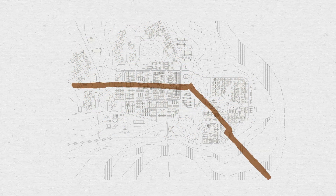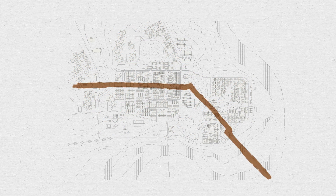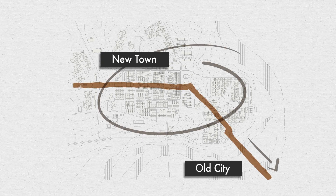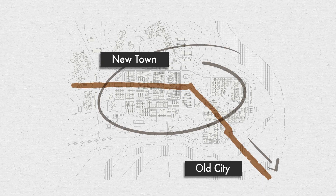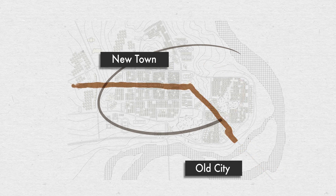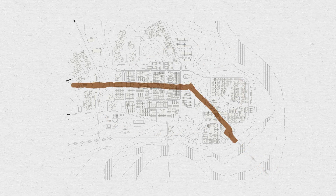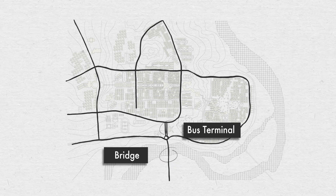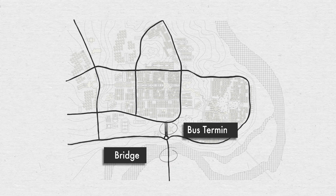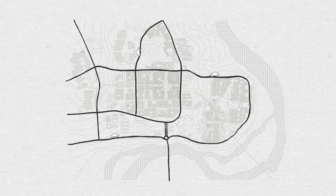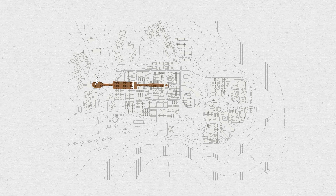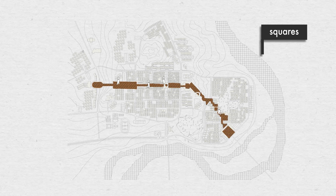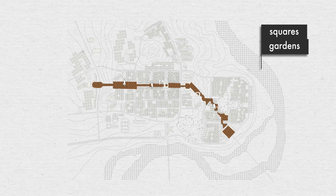Cameron Deber planned a linear pedestrian spine fluctuating in width that would connect the new town to the old city. Unfortunately, the pedestrian bridge was never built. A network of main roads connected to the bridge and bus terminal in the south provides car access, and is designed to encourage the inhabitants to move in the direction of the social spine, consisting of many squares, lush gardens, and fountains.